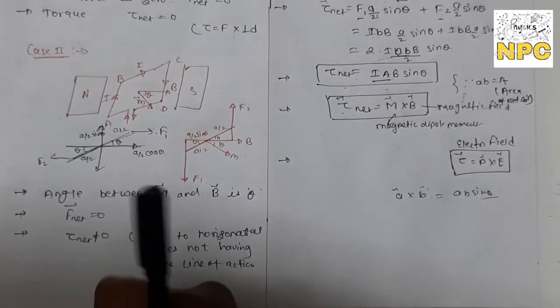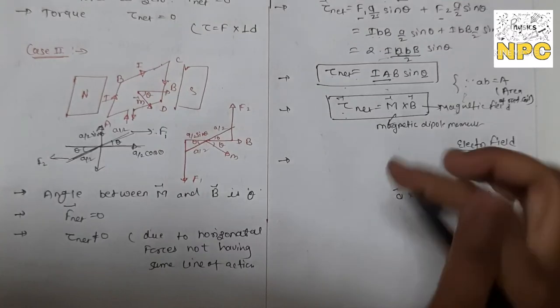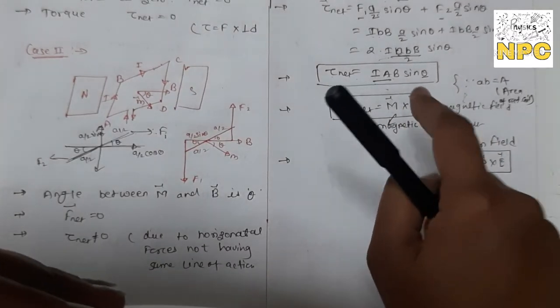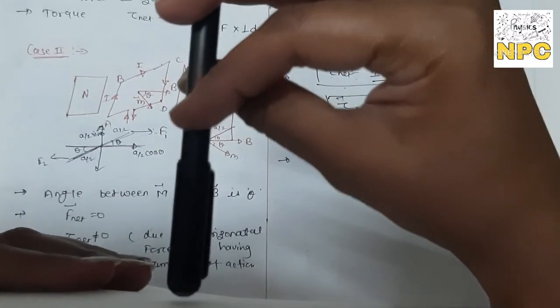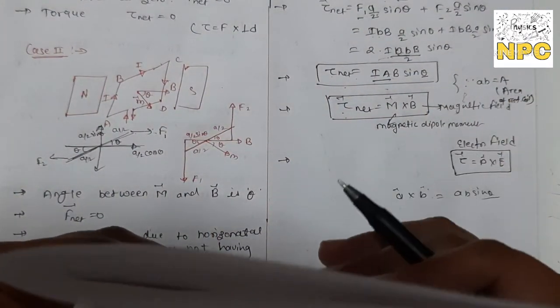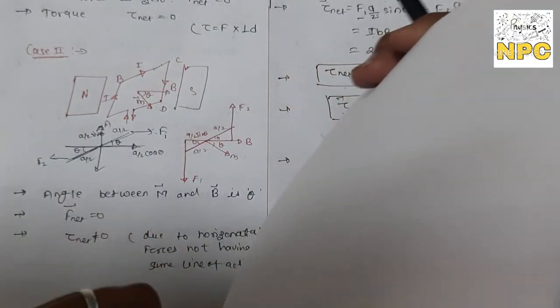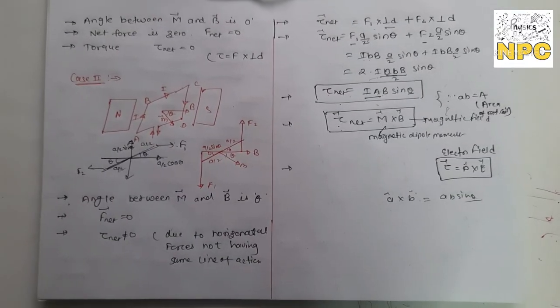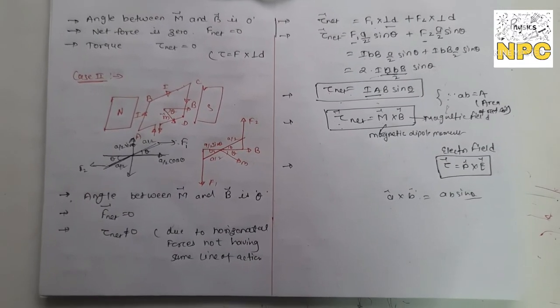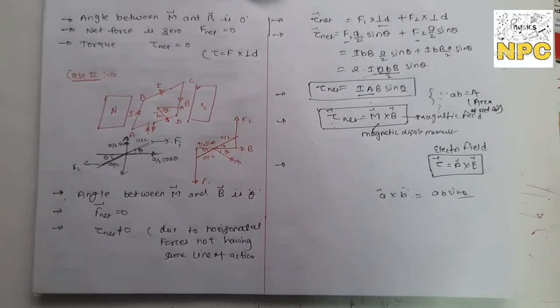The torque depends on M and B. When θ = 0, meaning the magnetic moment and magnetic field are in the same direction, torque is zero. When θ = 90°, you get the maximum torque. In the next video, we will discuss the galvanometer. Until then, keep watching and keep learning. Thank you so much.